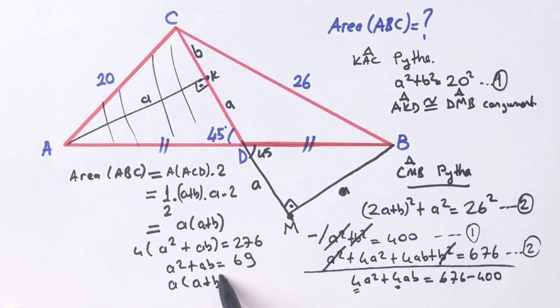Therefore, the equations are equal, that means the area of triangle ABC equals 69 unit square.